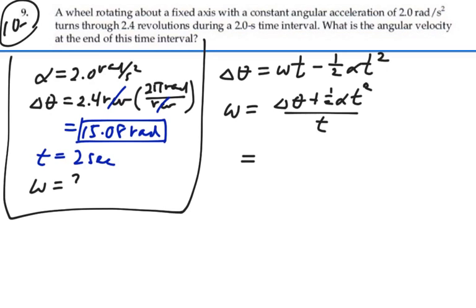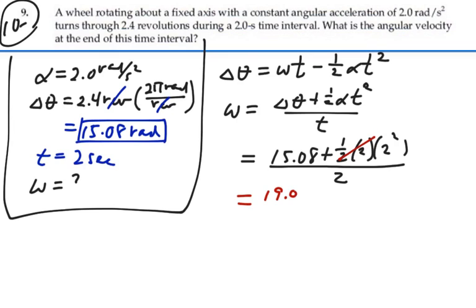If we put in our numbers, we have 15.08 plus 1 half times 2 times 2 squared over 2. The 1 half 2 cancels out. So we're going to have 15.08 plus 4, which is 19.08 divided by 2. So this is equal to 9.54 radians per second.